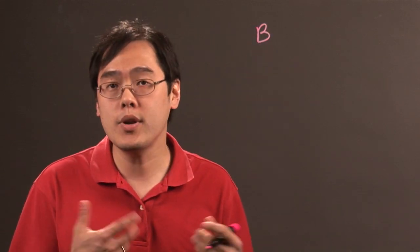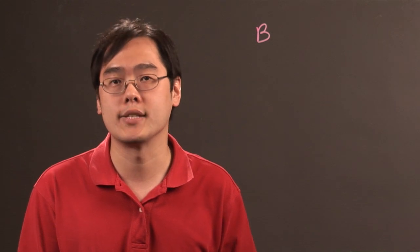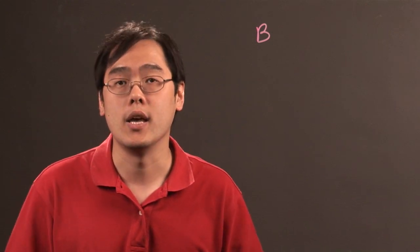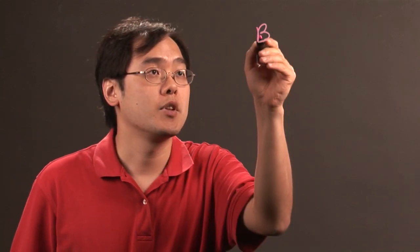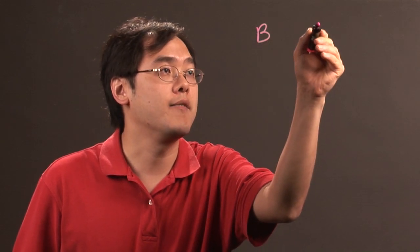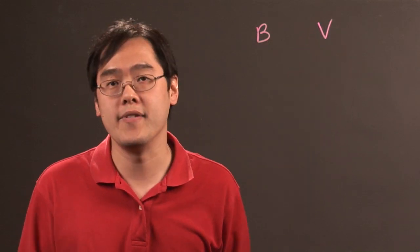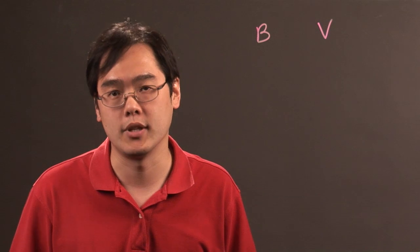When it comes to a basis, we often denote that set B. It's a pretty important concept in linear algebra to show that something is a basis in a vector space. The space is typically denoted by V because it's a vector space.